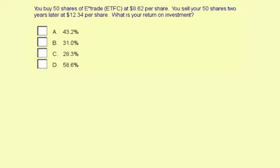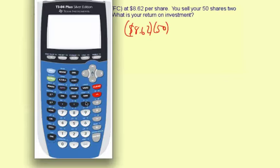So first you want to figure out the amount of money that you invested. You did 50 shares at $8.62, so $8.62 times 50 will give you the amount of money that you spent. $431.